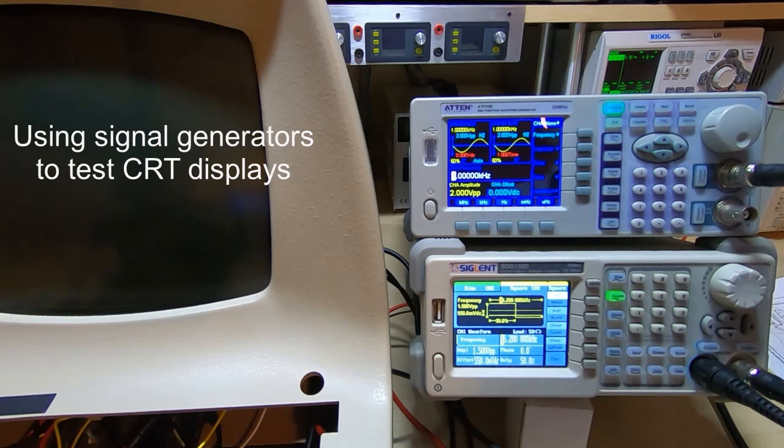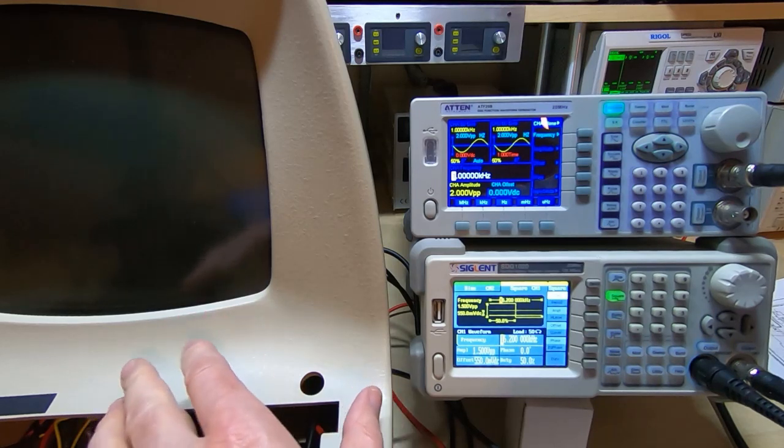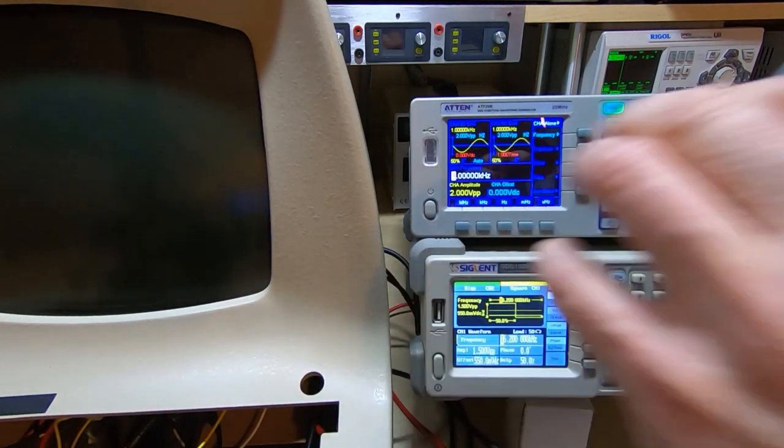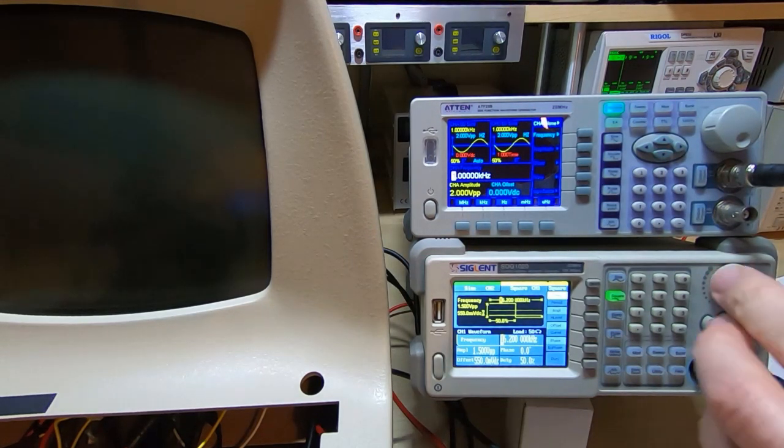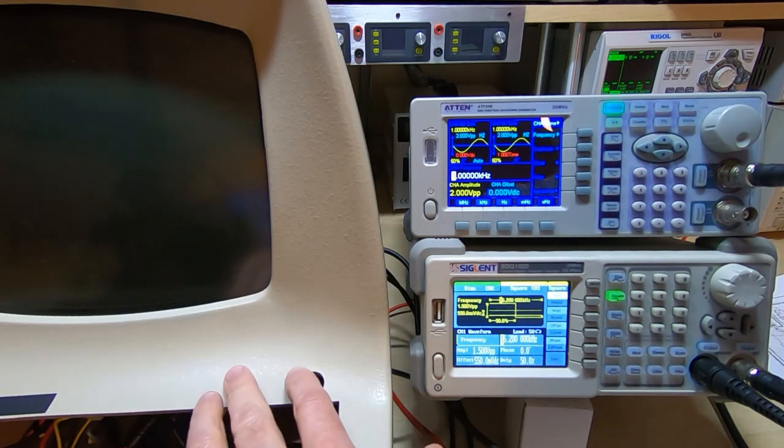In a number of my videos I've said that I use signal generators to test things like CRT monitors and I've shown the testing a few times, but I haven't really explained exactly how I set up the signal generators. I've been asked if I could just explain briefly how I set these up to actually do the testing.